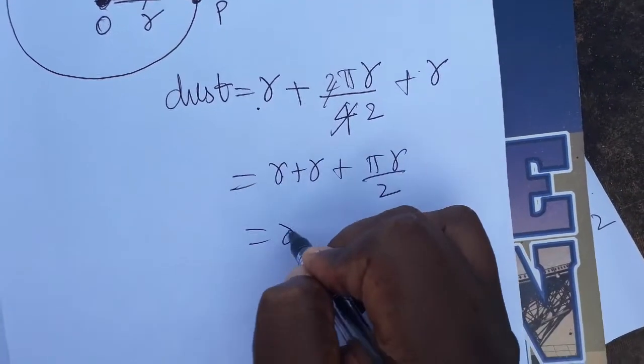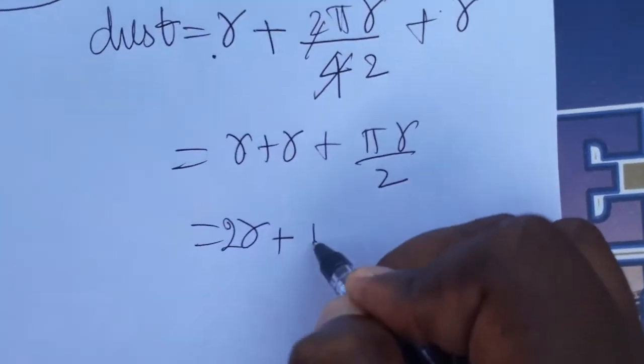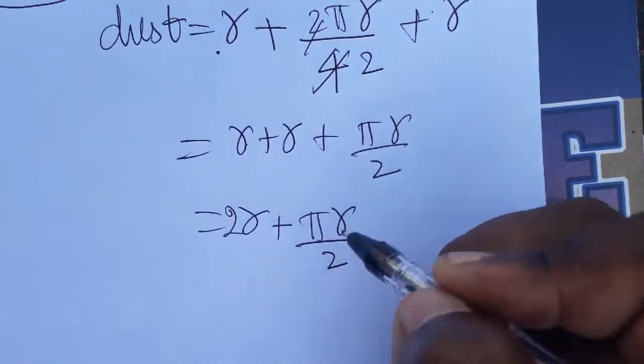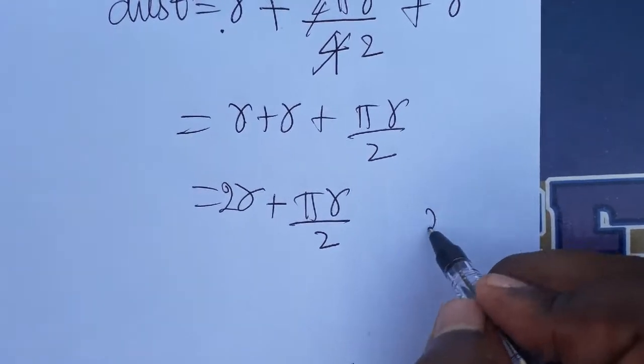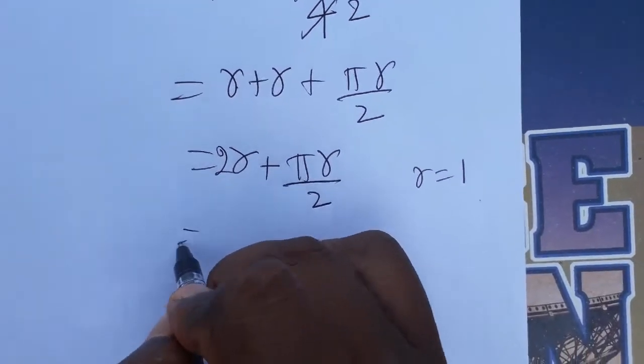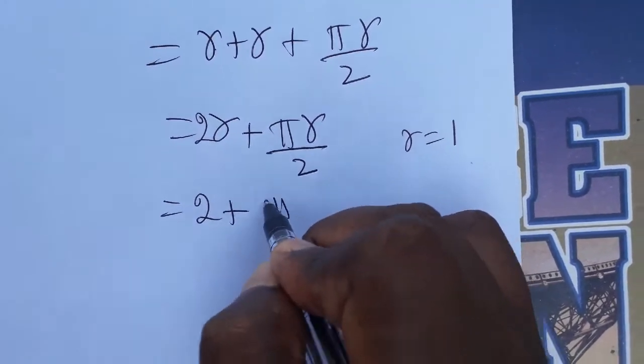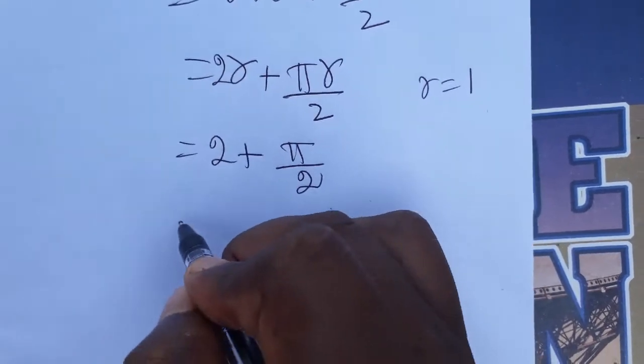This is going to be 2r, so r plus r equals 2r plus πr by 2. So it is 2r plus πr by 2. In case r, we will take it as 1 meter.